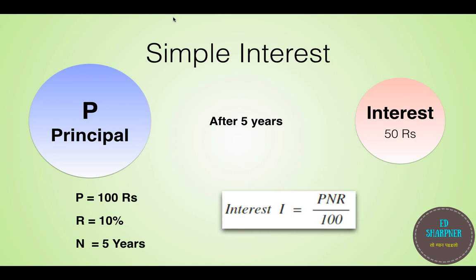So in this case for N equals to 5 years, the interest I is equal to P into N into R by 100, which is nothing but R percent of P multiplied by N. Here R equals to 10%, N equals to 5 and P equals to 100. So I is equal to 50.